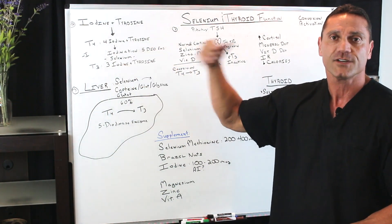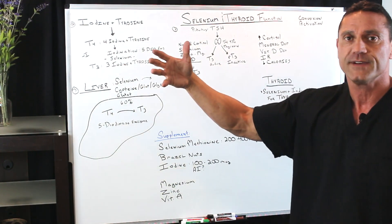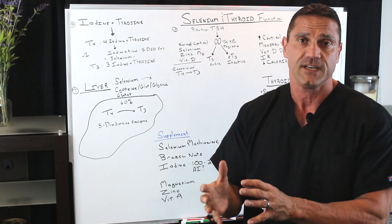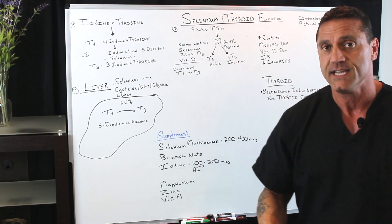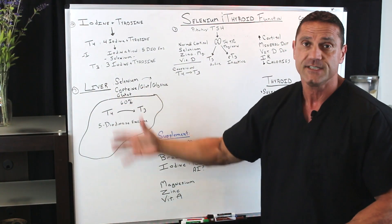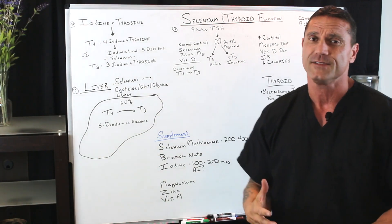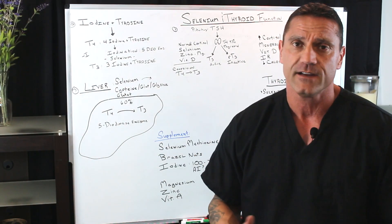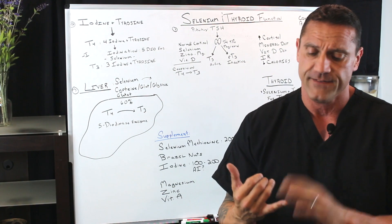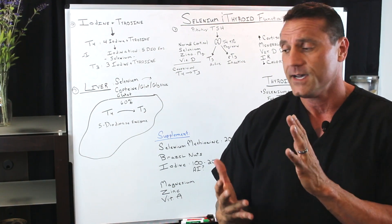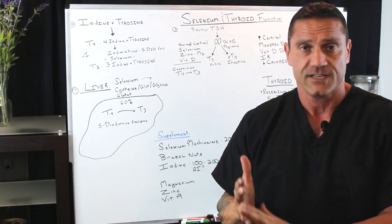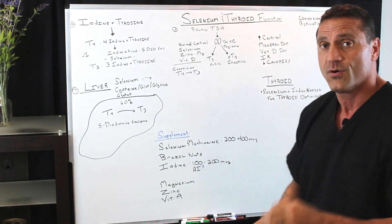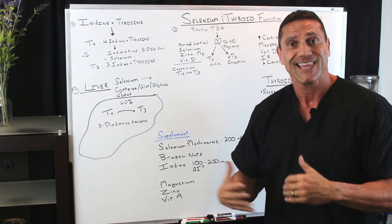In the liver, thyroid hormone circulates through the bloodstream, and 60% of inactive T4 gets converted to active T3 through the liver. This is why liver health is always so important. In my previous videos, I always talk about taking care of your liver — if you have fatty liver or any type of congestion in the liver. This is why glutathione is an important liver cleanser.